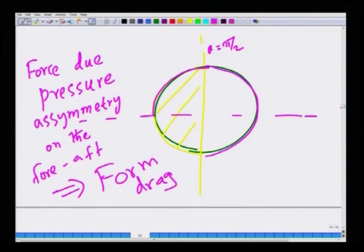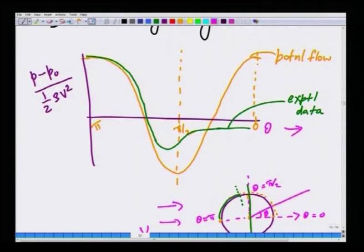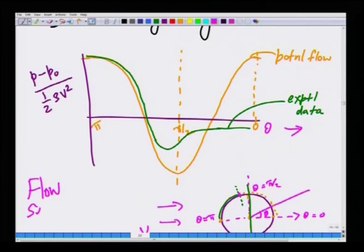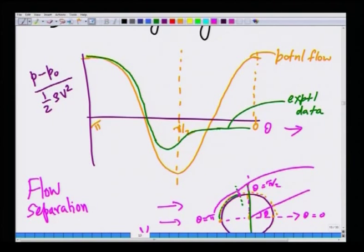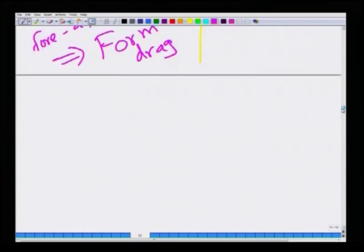The reason the actual pressure deviates from the potential flow prediction after a certain point is what is called flow separation. The flow that was following the surface of the cylinder essentially takes off from the surface. That causes the pressure to vary significantly, and the reason flow separates itself is because of viscous effects.